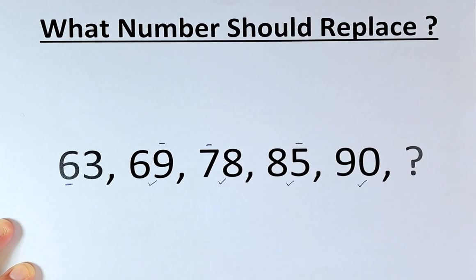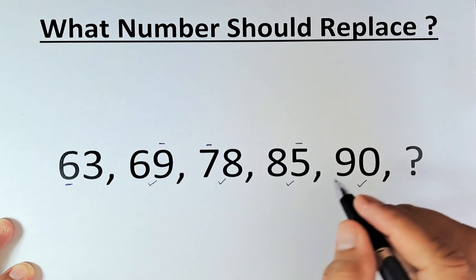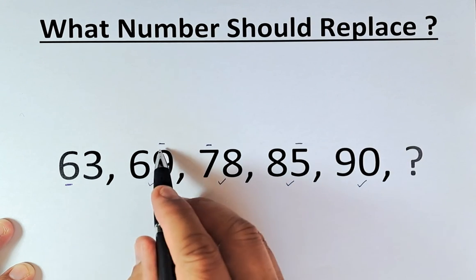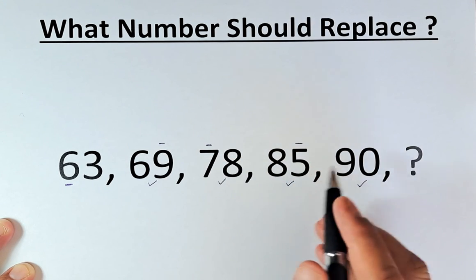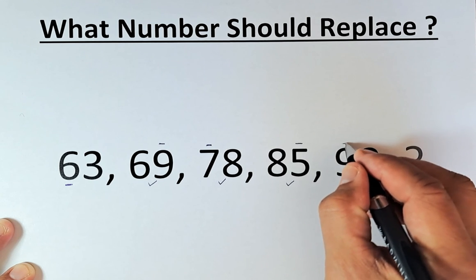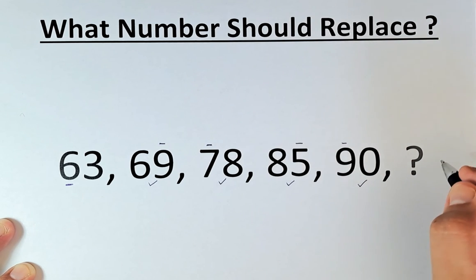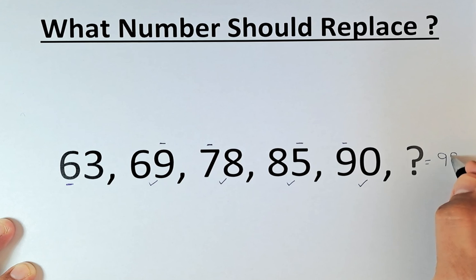And last but not least, from 90 to the question mark. This is first number, second number, first number, second number. Now we're going to add the first number. So 90 plus 9, the question mark is going to be 99.